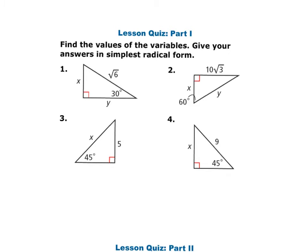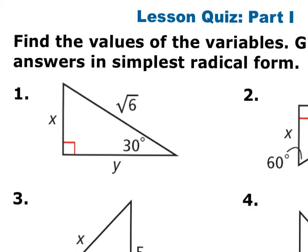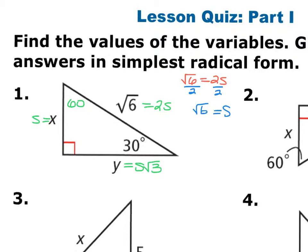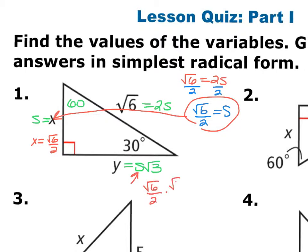Lesson quiz, question 1: In a 30-60-90 triangle, opposite the 60° is S√3 and opposite the 90° is 2S. The hypotenuse is √6, so 2S = √6, giving S = √6/2. Then X = √6/2. For Y, multiply S by √3: (√6/2) · √3 = √18/2 = 3√2/2.